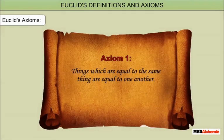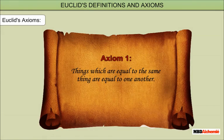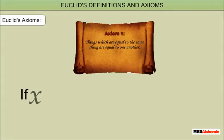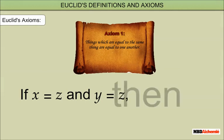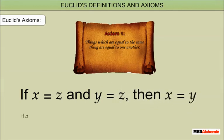Axiom 1: Things which are equal to the same thing are equal to one another. That is, if x is equal to z, and y is equal to z, then x is equal to y. Example: if a is equal to 7, and b is equal to 7, then a is equal to b.